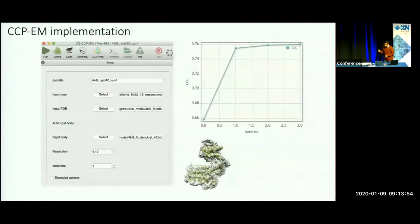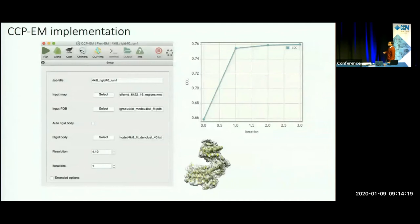FlexiM is also implemented in CCPEM with an interface. You need a model and map as inputs, and rigid bodies can be calculated from RIPFIND automatically, or you can specify your own rigid bodies in a text file. You get statistics on the improvement in fitting scores — this is the global cross-correlation score at each step of the FlexiM run. You can also visualize the improvement in Chimera with models from different iterations of FlexiM.